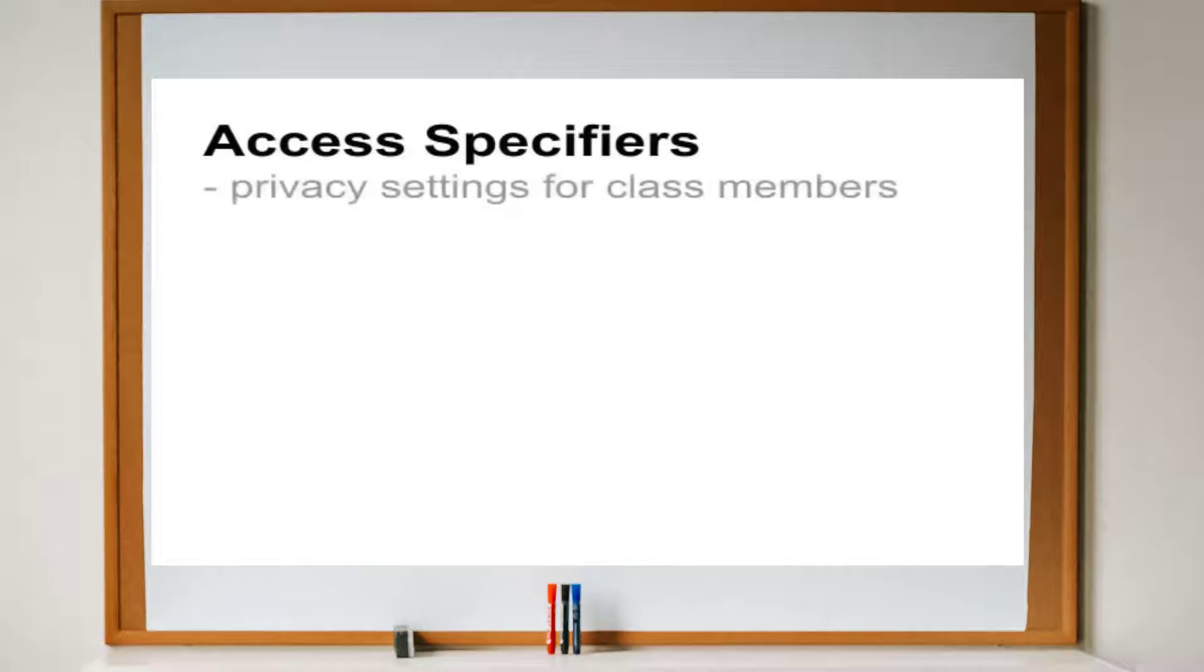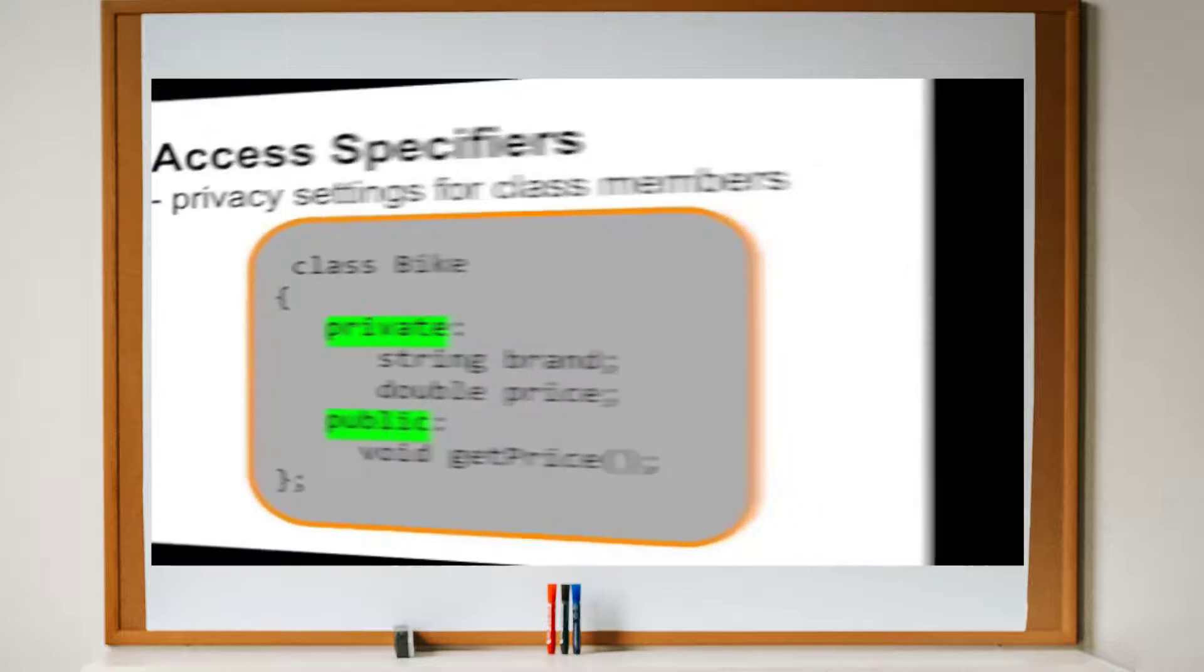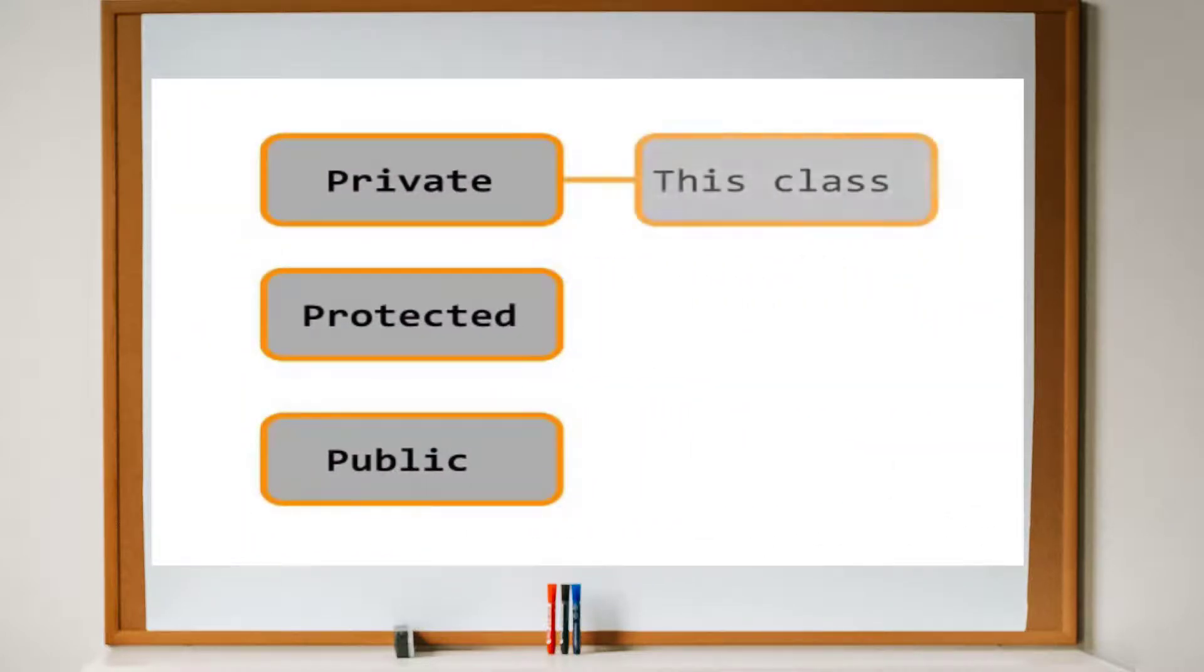In C++, there are certain keywords for controlling the access level of the data members and methods of the class. Private means that the class members are only visible to the class itself. Usually, data members are private so that you can access them only through the setter and getter methods.